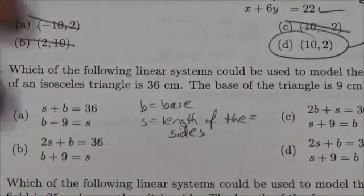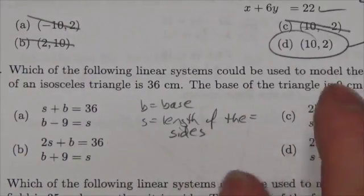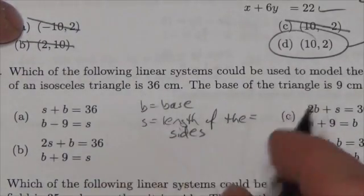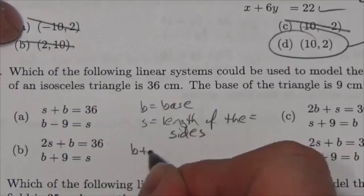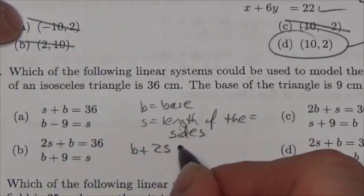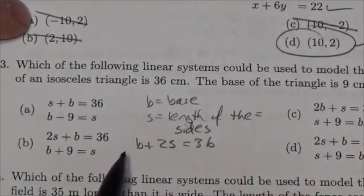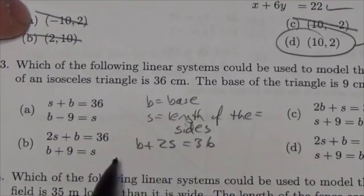So in a triangle where we know that the perimeter is 36, that's going to be the base plus two times those sides here, and that is going to equal 36. So right now, that has to be one of the equations here.